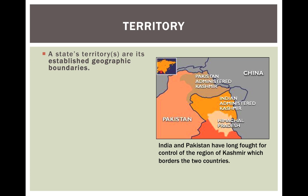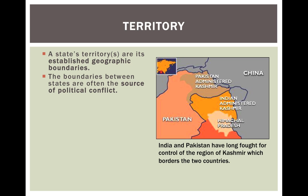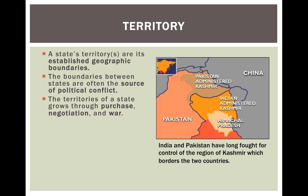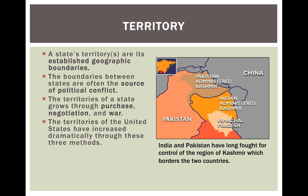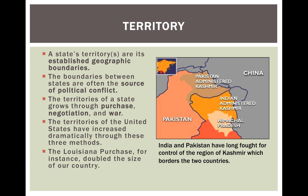Territory: a state's territory refers to its established geographic boundaries. The boundaries between states are often the source of political conflict. Territories of a state grow through purchase, negotiations, and war. The territories of the United States have increased dramatically through these three methods. To the right, you will see a picture of the region between India and Pakistan known as Kashmir, and the Indian and Pakistani governments have fought for many years over control of that territory. The Louisiana Purchase, for instance, doubled the size of our country.